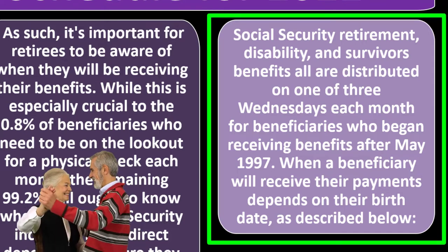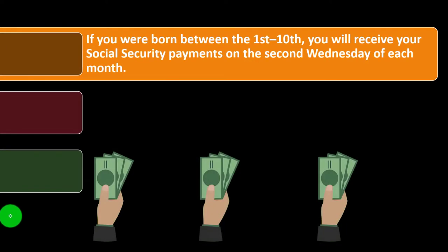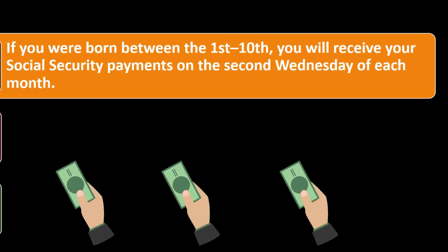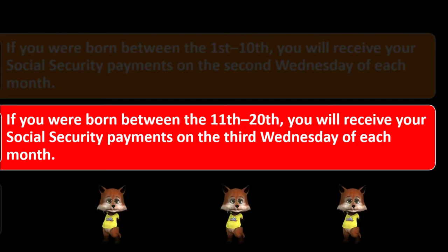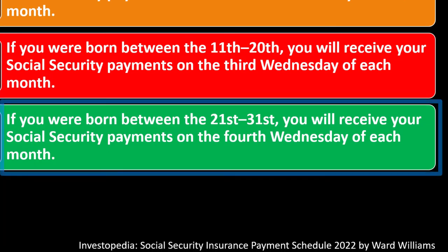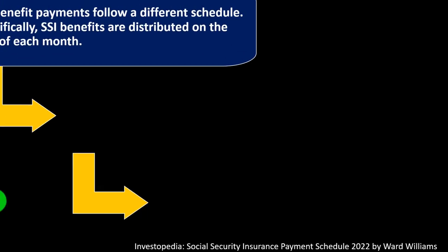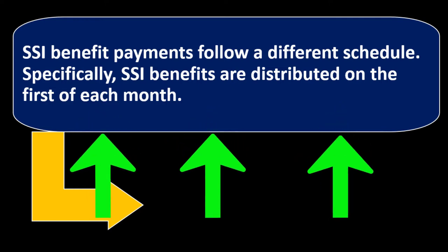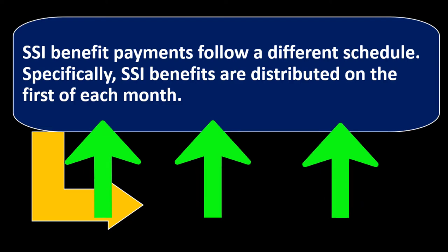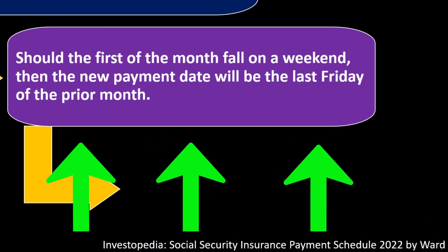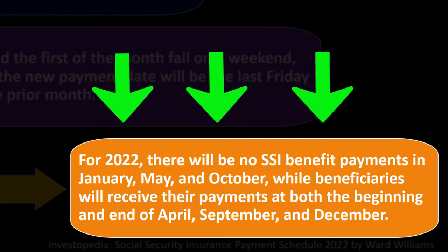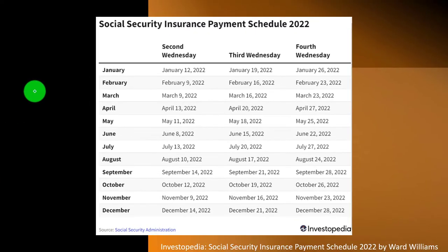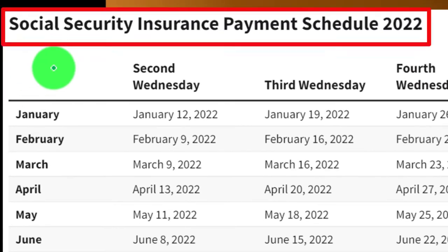When a beneficiary will receive their payment depends on their birth date. If born between the 1st and 10th, you receive payment on the second Wednesday of each month. If born between the 11th and 20th, you receive payment on the third Wednesday. If born between the 21st and 31st, you receive payment on the fourth Wednesday. SSI benefit payments follow a different schedule — distributed on the first of each month, or the last Friday of the prior month if the first falls on a weekend.